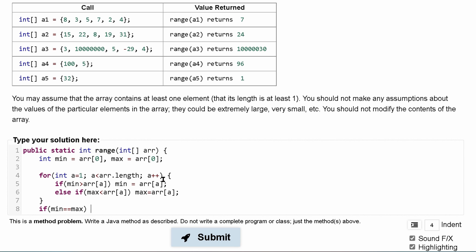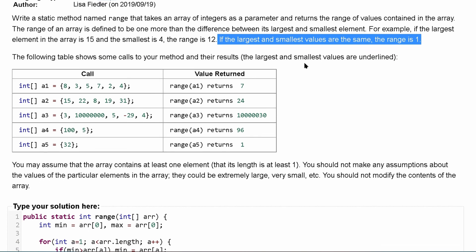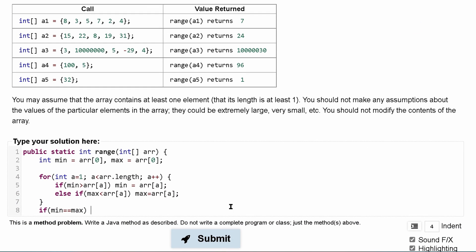Because if they're equal to each other, I forgot to read this part, but if the largest and smallest values are the same, the range is one. So if they're equal to each other, range is one, we're just going to return one.